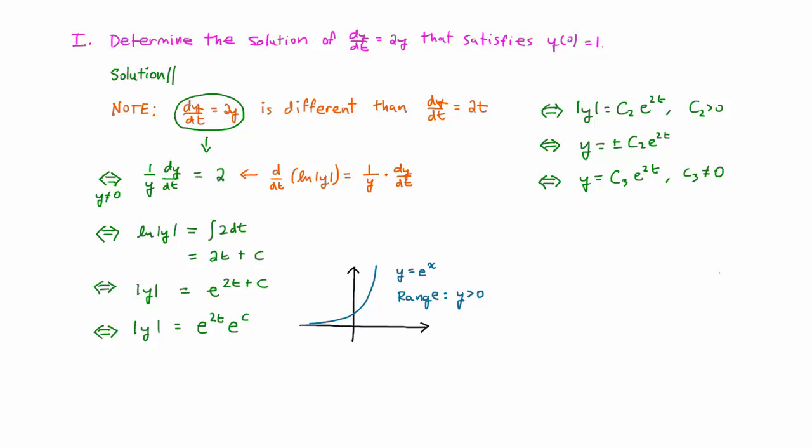At this point, we're almost finished, but there's one loose end that we have to tie up. Remember that at the beginning, we assumed that y is never equal to zero for any value of t.